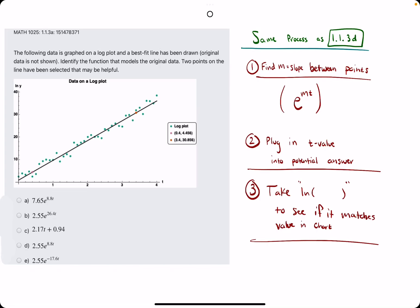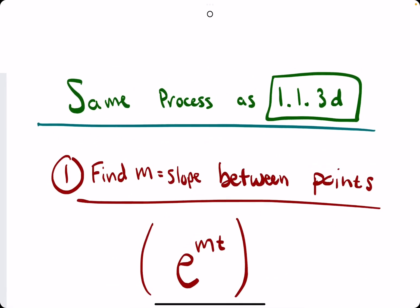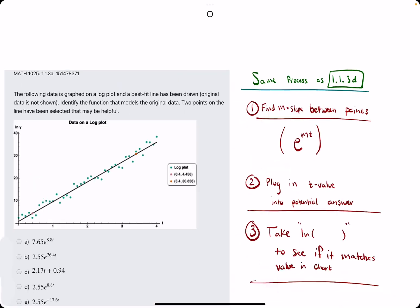Okie dokie. Second example for this problem. If you'd like more of a breakdown, please visit the first example. I will do this one a little bit faster. And just to reiterate, the process we'll use for this one will actually be the same process that we used back in 1.13D.